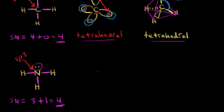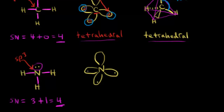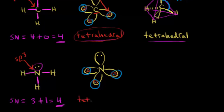Let's draw those four hybrid orbitals for nitrogen — one, two, three, and four. For the dot structure of nitrogen, you'd have one electron, another electron, another electron, and then two in the last one. Then we put in the hydrogens, each with one electron in an unhybridized s orbital. The overlap of orbitals gives us three sigma bonds in ammonia, with the lone pair sitting up top. The arrangement of these electron pairs is tetrahedral, so VSEPR theory gives a tetrahedral electron group geometry.